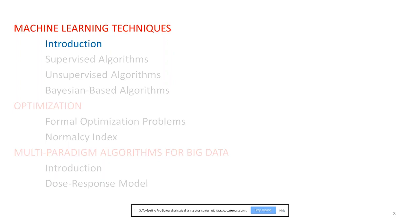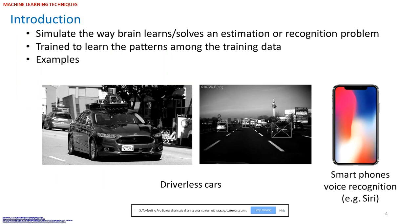Machine learning algorithms are inspired from the ability of the human brain to learn or solve an estimation or recognition problem. Similar to the human brain, they need a training phase to be ready for an estimation or recognition problem, like a student who needs to study course materials to be prepared for exam day. Such algorithms have been employed in developing driverless cars to recognize lanes, adjacent vehicles, traffic signs, speed limits, and traffic lights, and to act to prevent accidents or reduce the probability of injuries or fatalities.